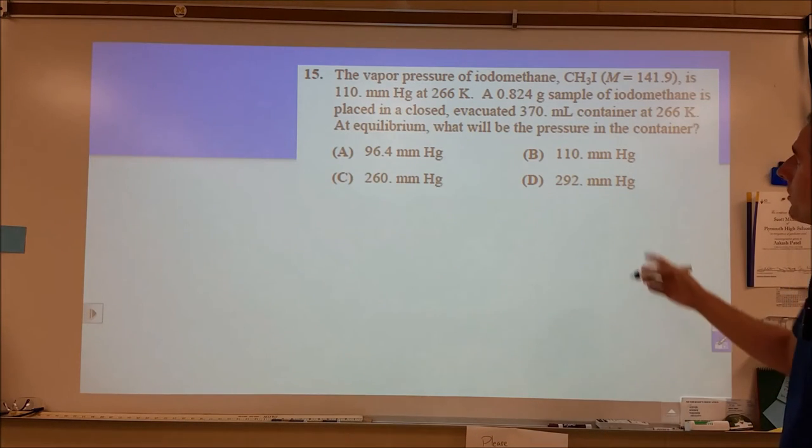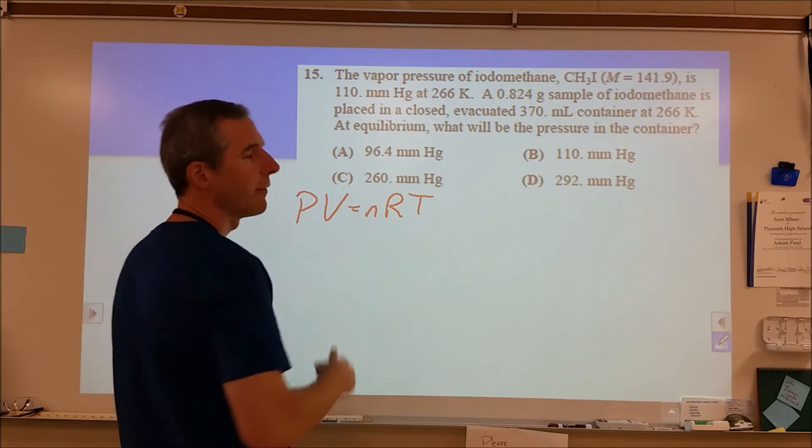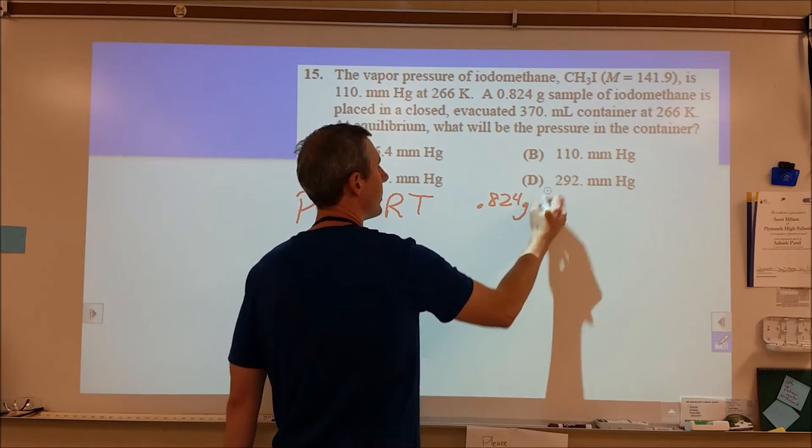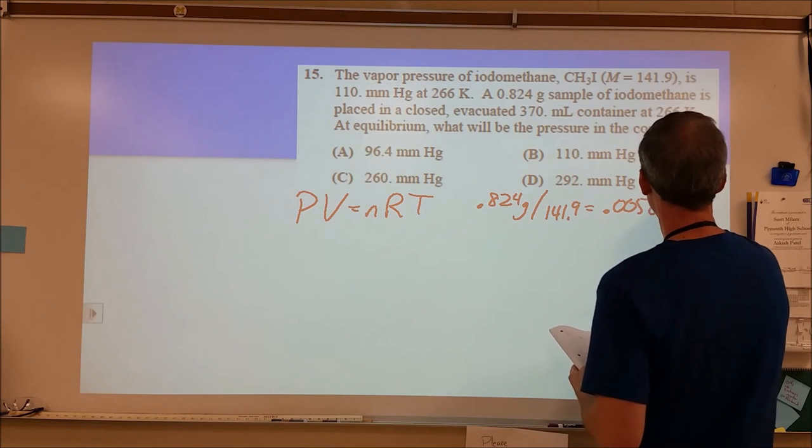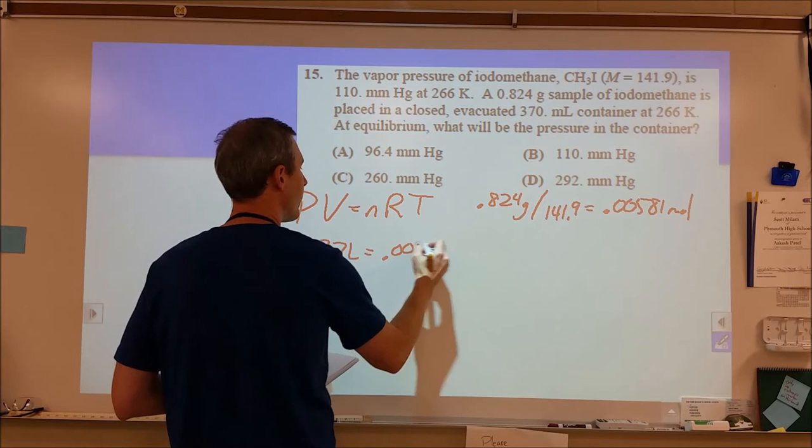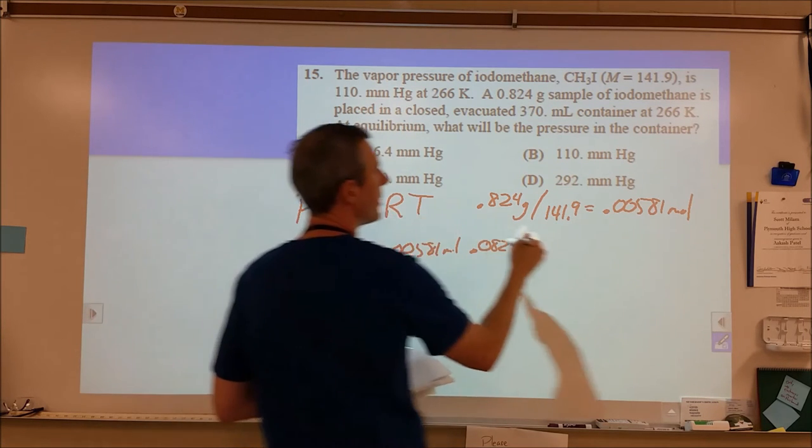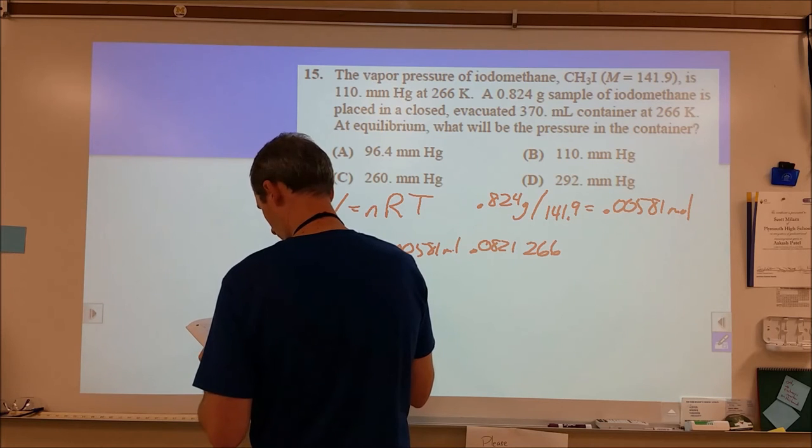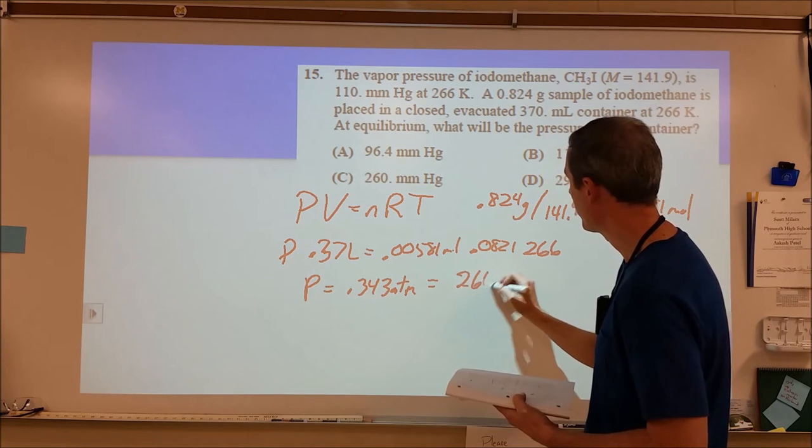All right, 15, we have a vapor pressure question. So, what I did for this was, I started by figuring out, from a PV=nRT calculation, what the pressure would be if all of that gas went into these conditions. So, what I did was, I figured out how many moles. I had 0.824 grams, and I divided by the molar mass given, 1.9. So, that came up to be 0.00581 moles. Okay, so I figured out the pressure. The pressure was 0.37 liters is equal to 0.00581 moles. And then I did, I just did 0.0821 for my R value and the temperature of 266. So, I solved for my pressure in atmospheres, and that came out to be 0.343 atmospheres. And then from there, I changed that into millimeters of mercury, so I could kind of do a comparison of what they told me.